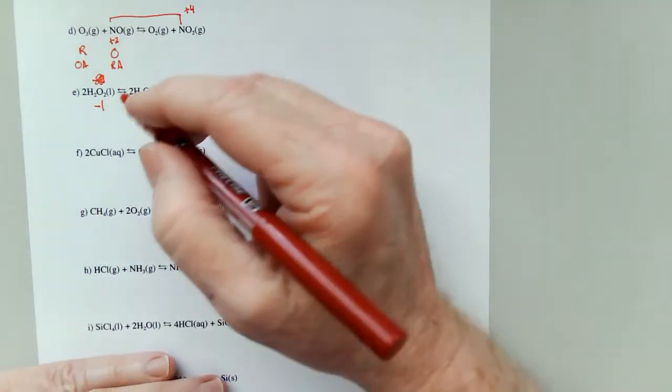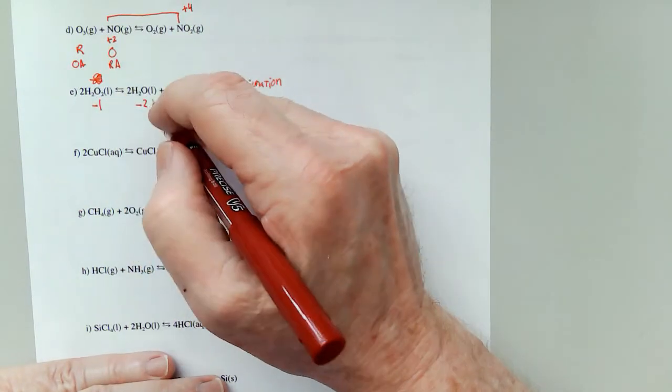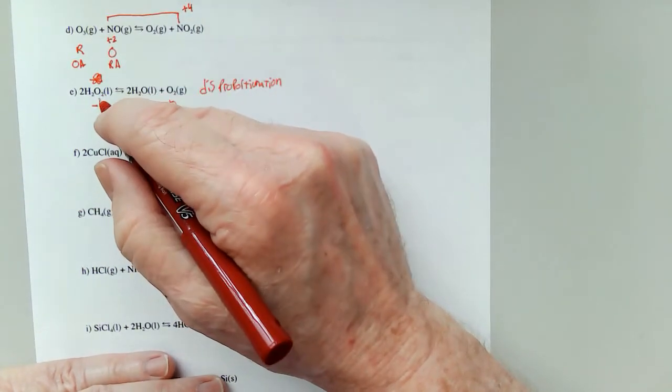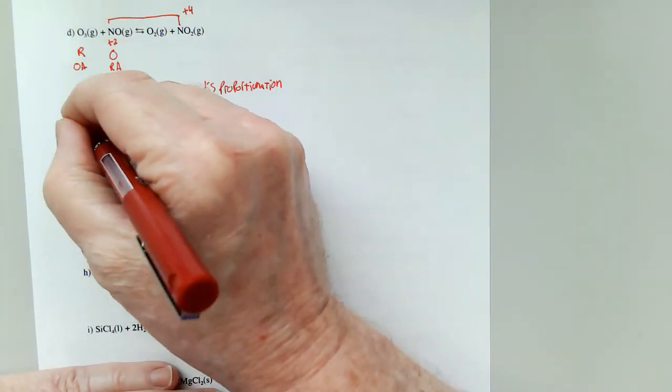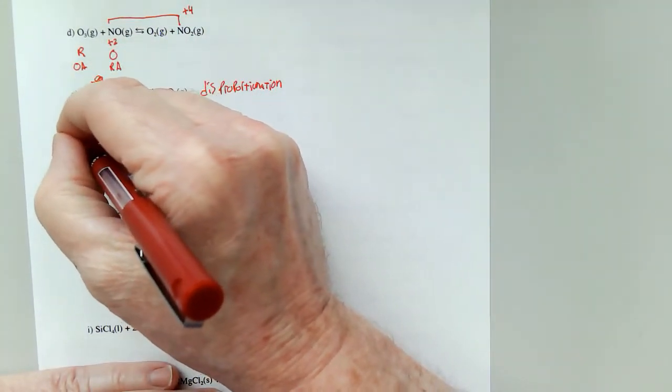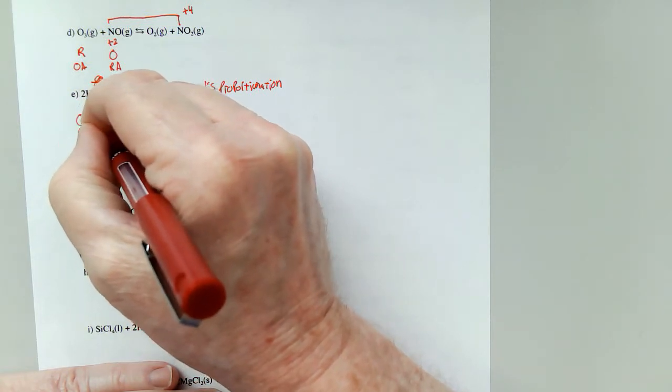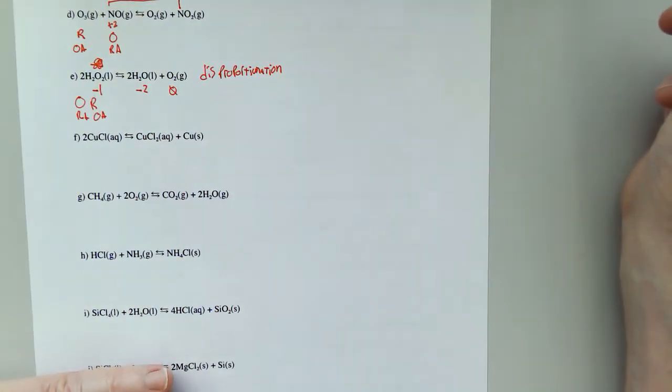So one of the oxygen atoms gains an electron, and one of those oxygen atoms loses an electron. So it is both oxidized and reduced. It's both the reducing agent and the oxidizing agent.